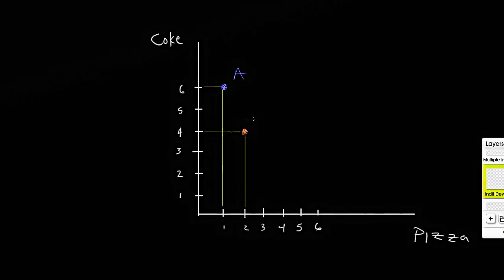So let's call this bundle of four cokes and two pieces of pizza bundle B. Now continuing this train of thought, if I wanted to get that third piece of pizza, I'm probably going to give up less coke. So in this case, maybe because my coke supply is less and my pizza supply is more than it used to be, maybe I'm willing to only give up one coke to get one piece of pizza. So this would be bundle C.